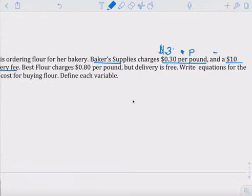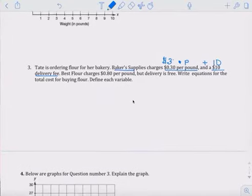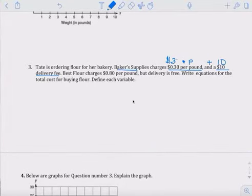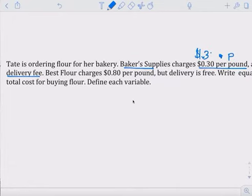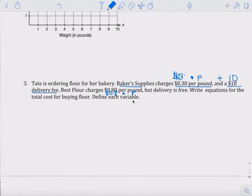And a $10 delivery fee. Best Flour charges 80 cents per pound, 0.8 per pound, but delivery is free, no delivery, plus zero. Write an equation, we don't have to write plus zero.